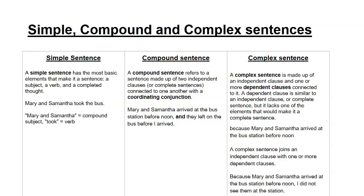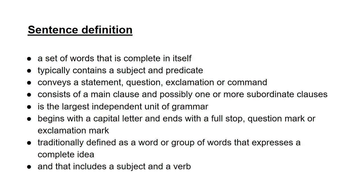To make it a complex sentence, you join an independent clause with one or more dependent clauses: 'Because Mary and Samantha arrived at the bus station before noon, I did not see them at the station.' That is an example of a complex sentence.